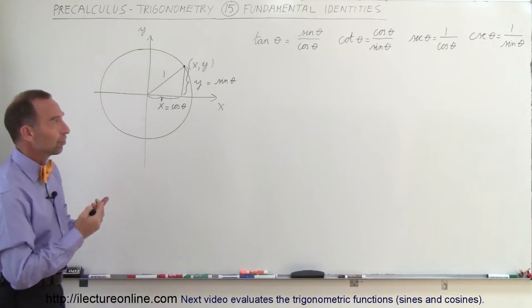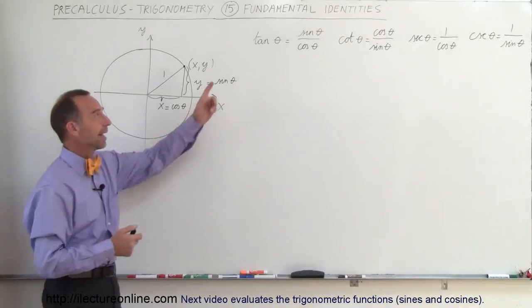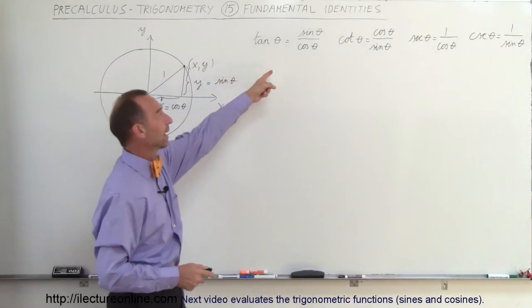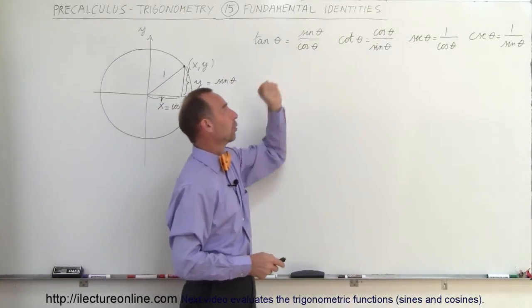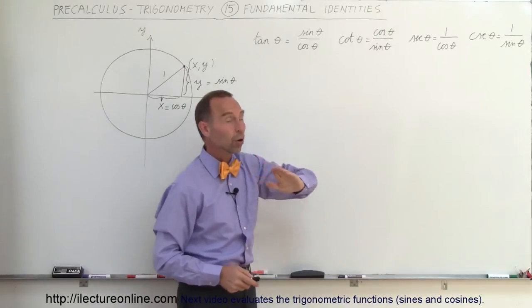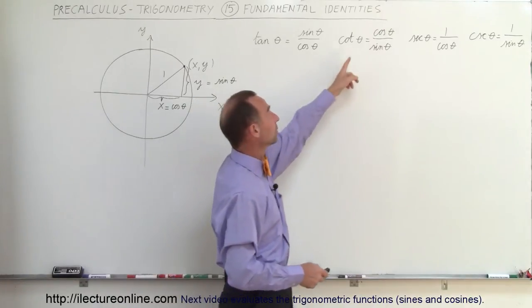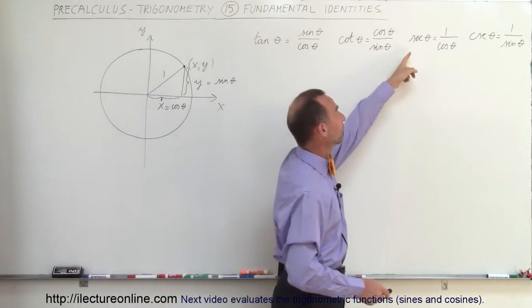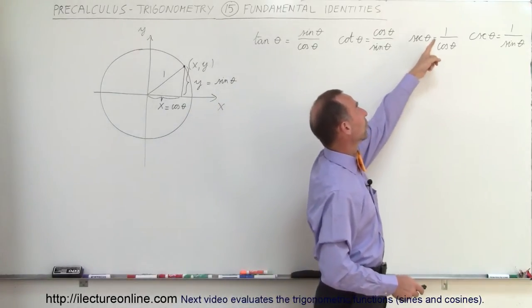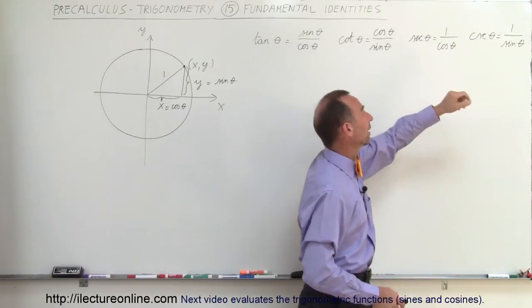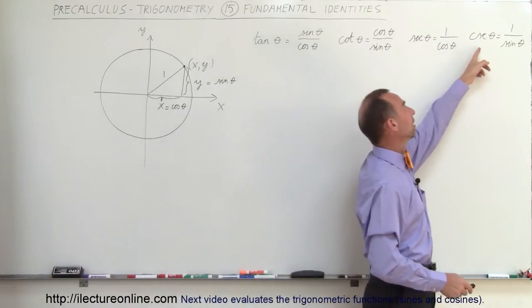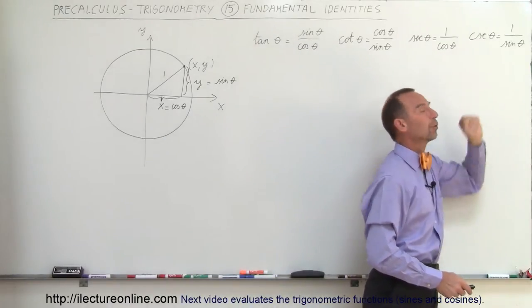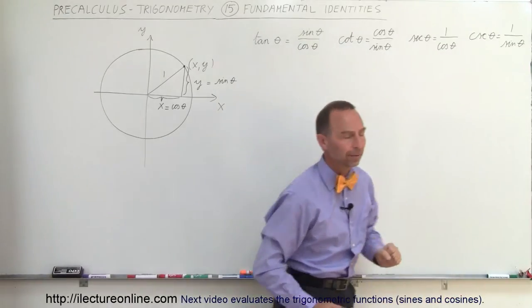First of all, we understand that the tangent of theta is defined as the sine over the cosine. The cotangent of theta is the cosine divided by the sine. The secant of theta is 1 over the cosine, and the cosecant of theta is 1 over the sine of theta.